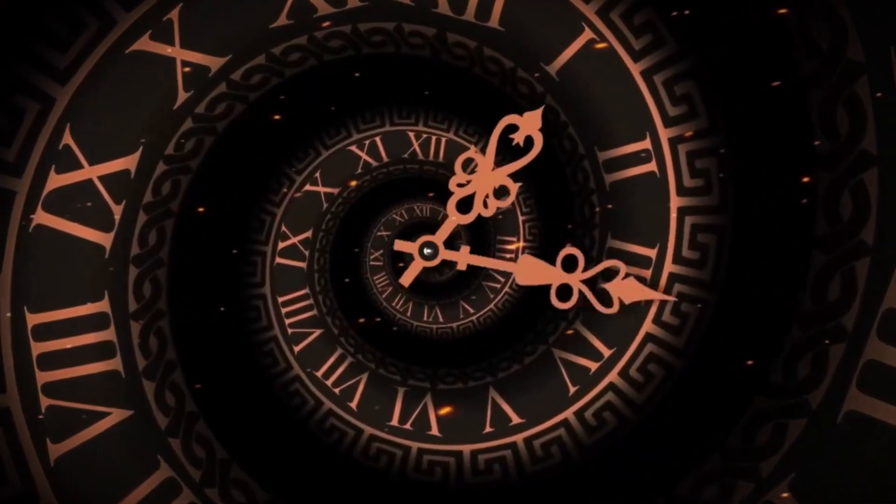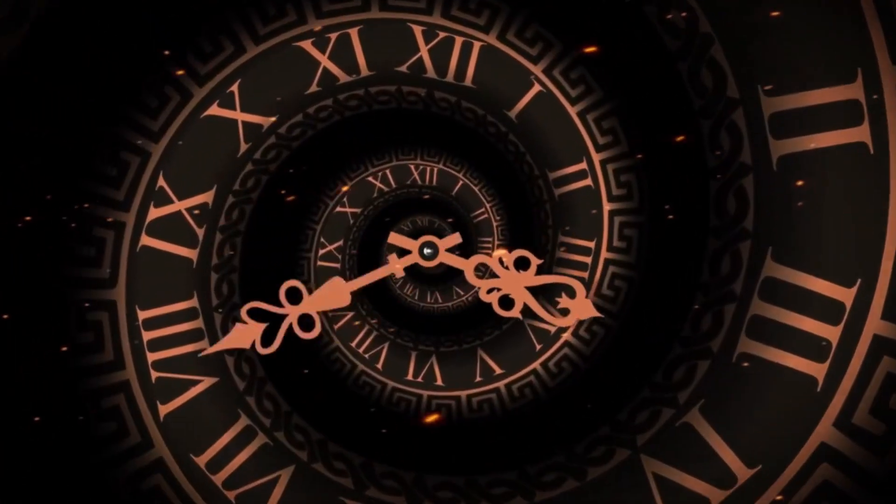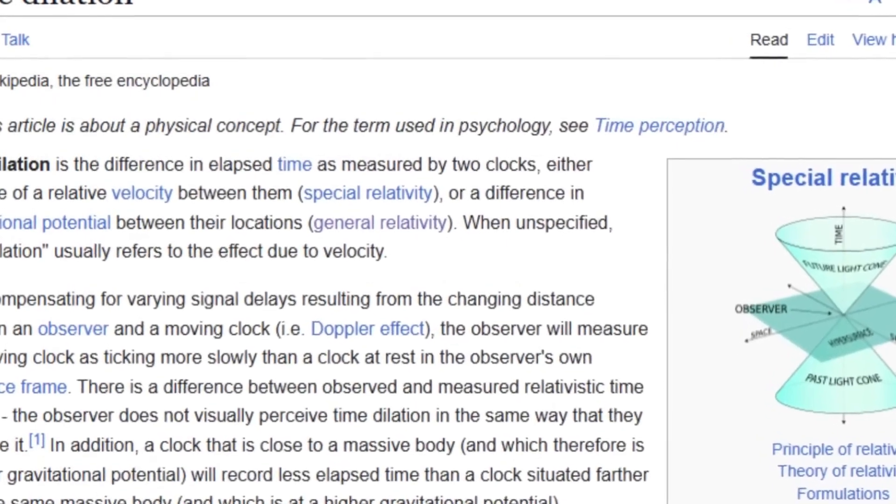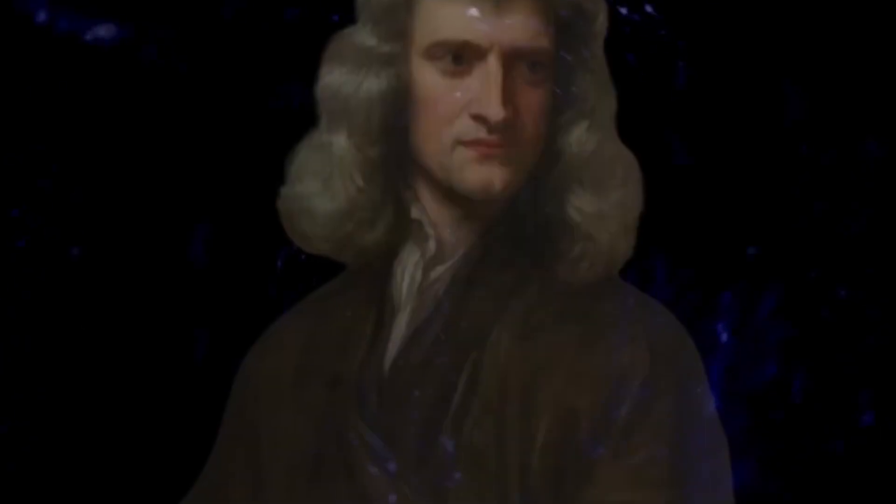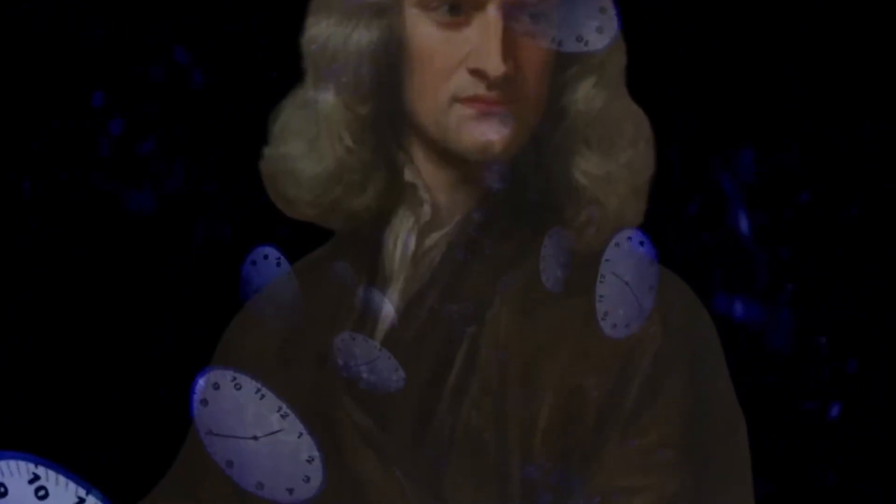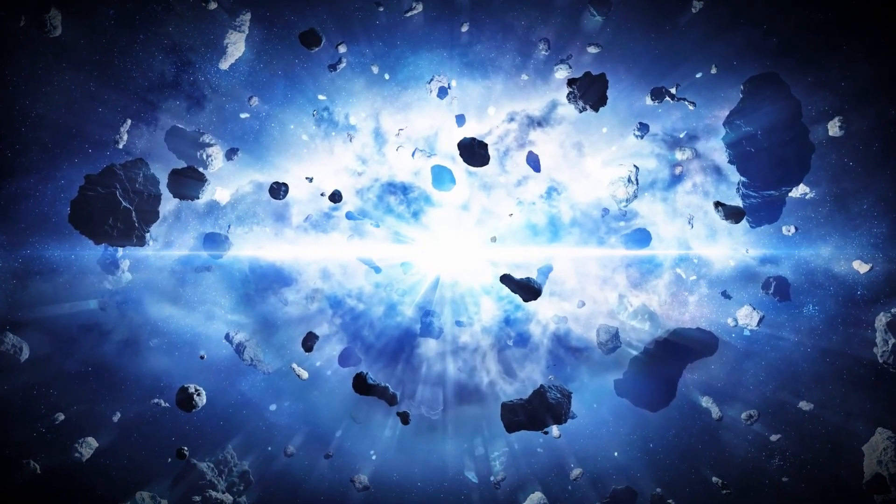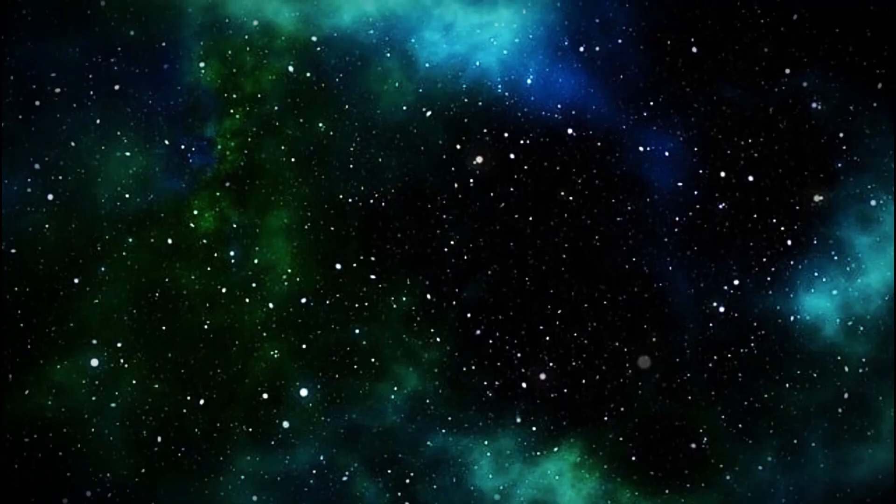Let's take a look at Schrödinger's cat, a famous thought experiment by the physicist Erwin Schrödinger from 1935. In this experiment, a cat is locked in a box with a lethal poison capsule, but no one knows when the poison will be released. Against this backdrop, the cat can be considered both dead and alive at the same time, because its state would only change to one of the two states upon direct observation.